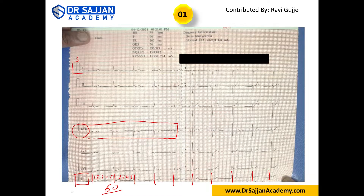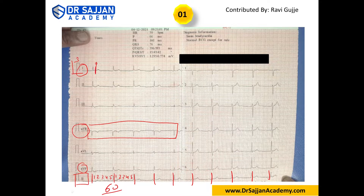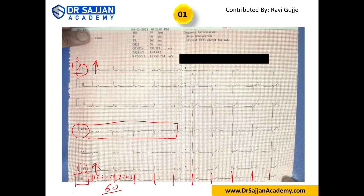Now let's go to the axis. Axis is assessed in lead one and lead AVF. In lead one it's going up, and in lead AVF it's going up — if both are going up, that means it is normal axis.